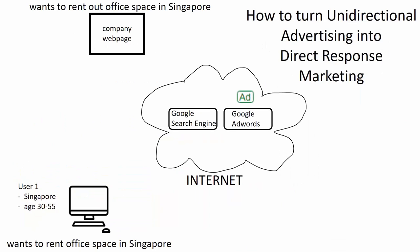Let's look at our setup. We have a company that wants to rent out office space in Singapore. Then we have a user who lives in Singapore, aged 30 to 55, who wants to rent office space in Singapore — a perfect match. We have the internet with a Google search engine, both organic and Google AdWords. The direct approach would be to program Google AdWords such that searches for office space rental in Singapore are forwarded to the company webpage. This is what we do not want, because it is unidirectional advertising and very complicated to find out where a new customer comes from. It is also quite complicated for the potential customer to find information on the company webpage about what to buy and how much.